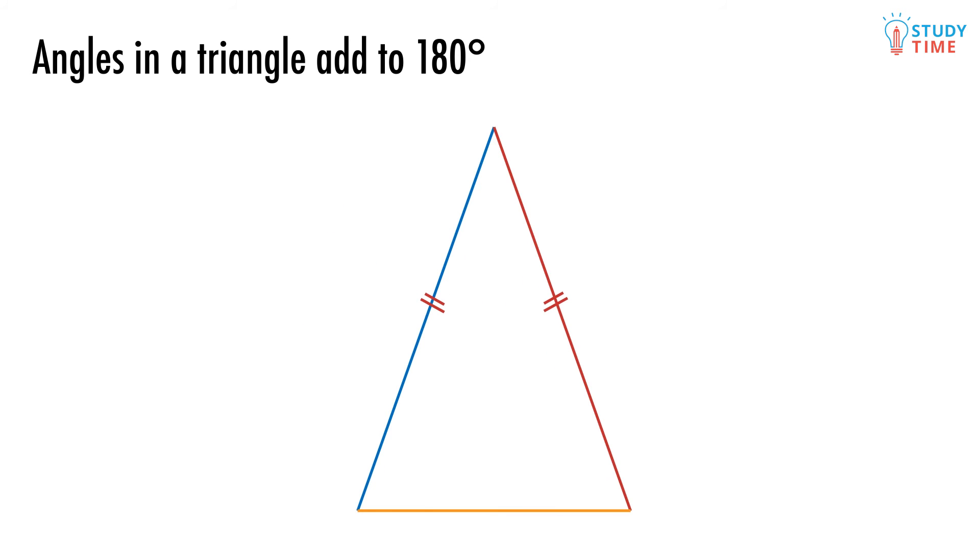Again, with this tall skinny isosceles, it has two long equal sides, and so these angles at the bottom must be equal. If they were both 70 degrees, we can say that they both add to 140 degrees, making this angle 40 degrees.